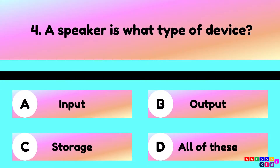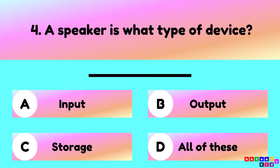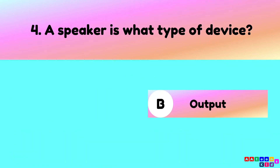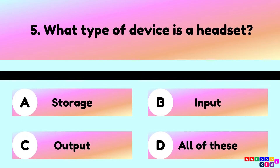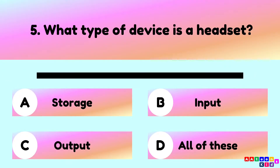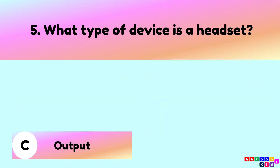A speaker is what type of device? A speaker is an output device. What type of device is a headset? A headset is an output device.